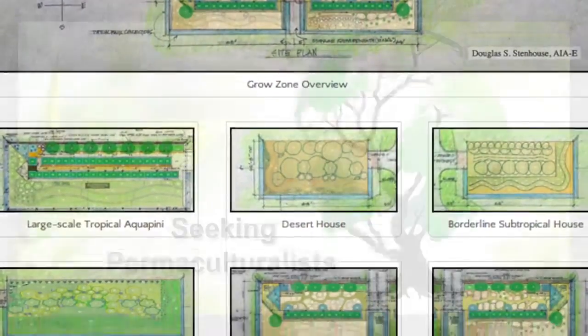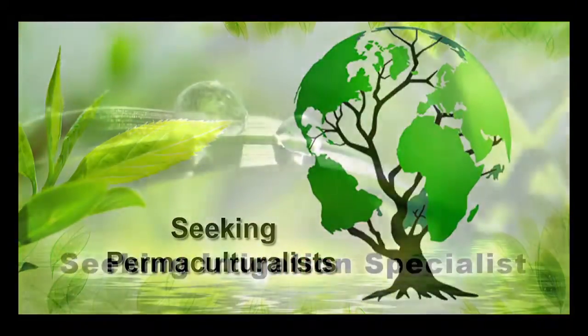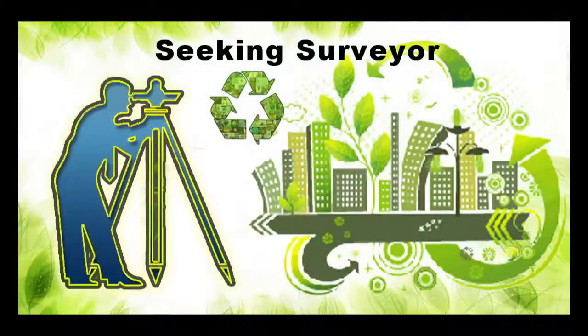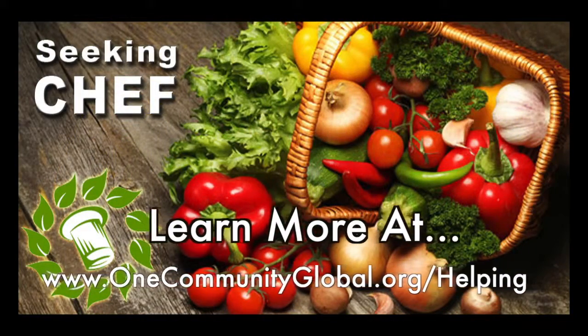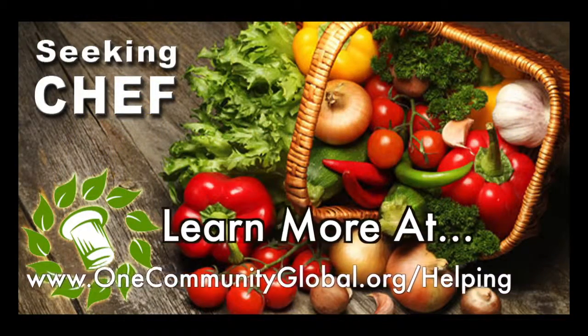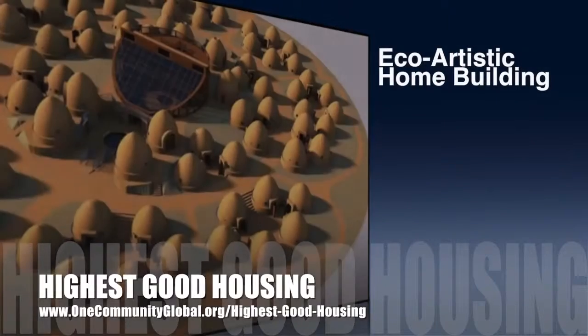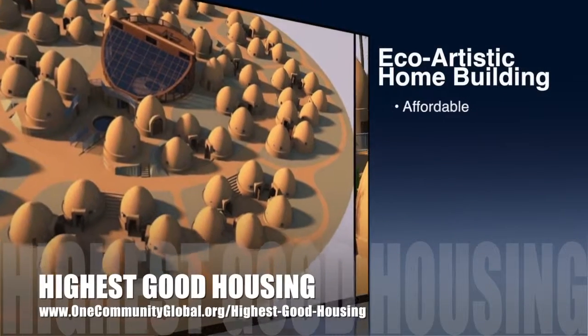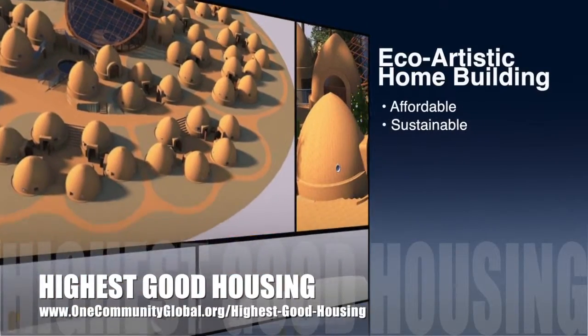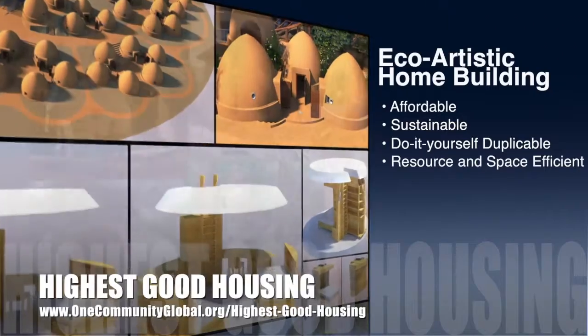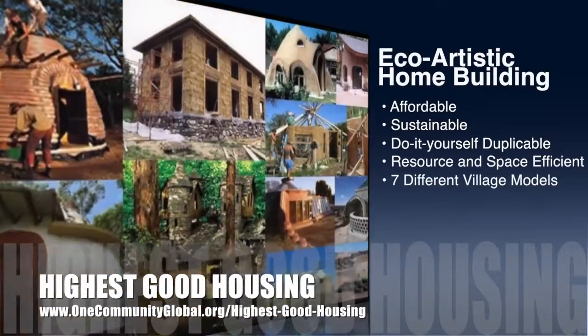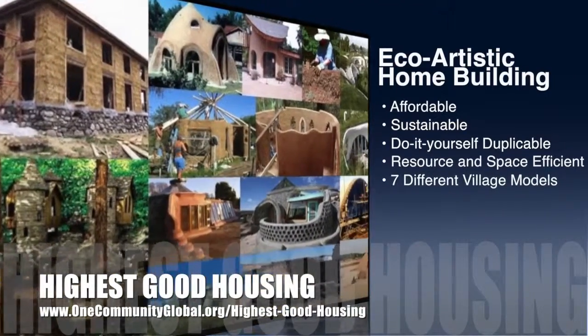In this area of our open source project, we are seeking permaculturalists, an irrigation specialist, a surveyor, and a chef to join our team as either consultants to the project or pioneers who will be moving onto the property with us. One Community's approach to highest good housing is eco-artistic home building that is affordable, sustainable, do-it-yourself, duplicable, resource and space efficient, and consists of seven different sustainably constructed village models.